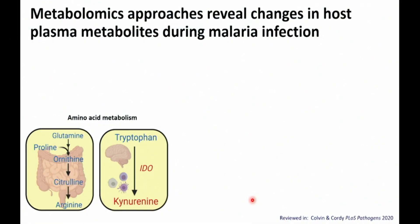Metabolomics approaches have really revealed changes in host plasma metabolites during malaria infection. A large body of work by many people, including several in this room, has led us to key known factors of what changes in the host during the course of a malaria infection. This was a topic that a graduate student in my lab, Heather Colvin, and I reviewed in 2020, where we searched through the literature and categorized findings that so many researchers have contributed to over the years. One of the things we really highlighted is this big depletion in amino acids that occurs in the course of malaria.